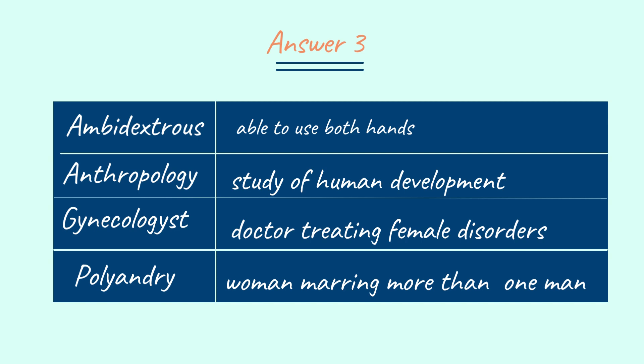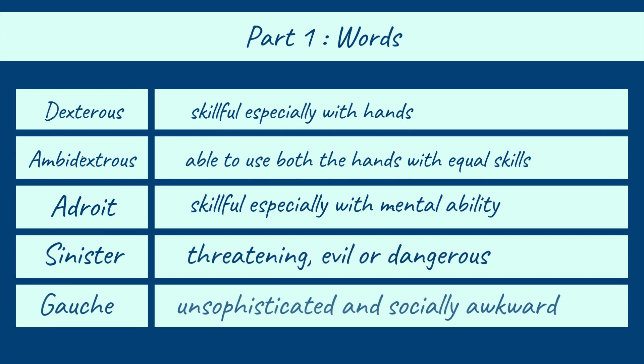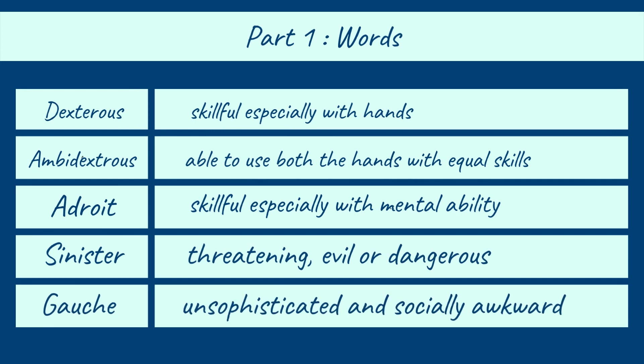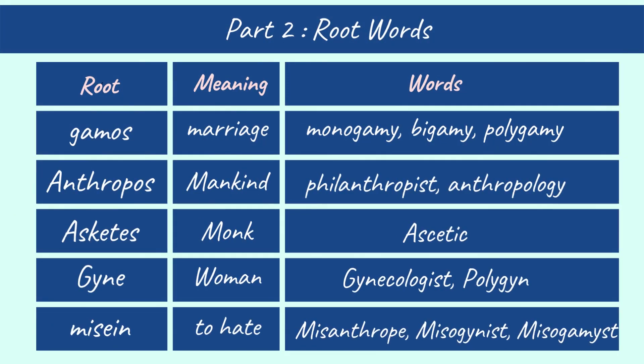Here comes the end of the exercises. I hope you would have solved all the exercises on your own. Let's quickly revise the 5 new words from Part 1: dexterous, ambidextrous, adroit, sinister, and gauche. Then in Part 2, we learnt the root words: Gamos — marriage; Anthropos — mankind; Ascetis — monk; Gyne — woman; Misan — to hate.